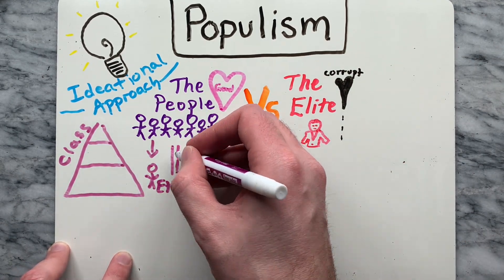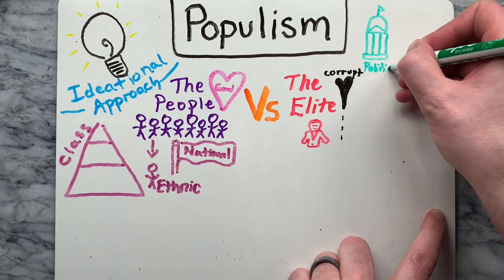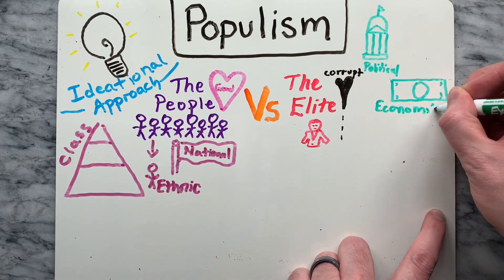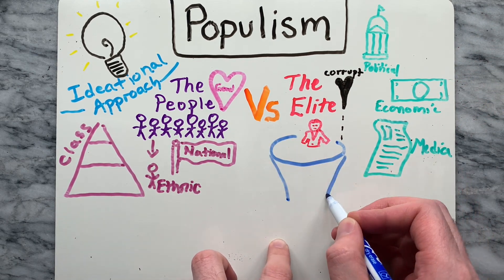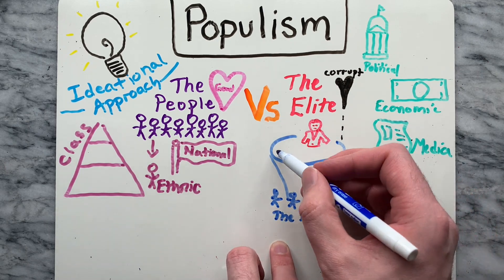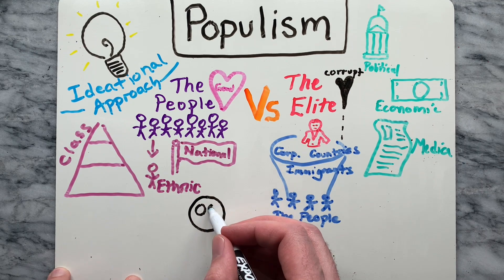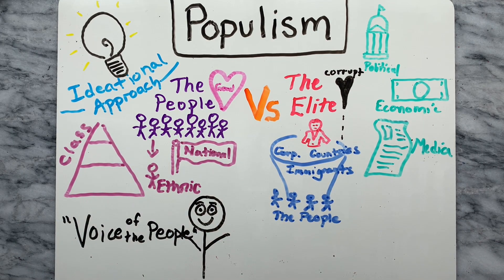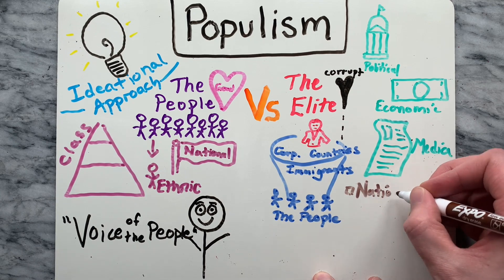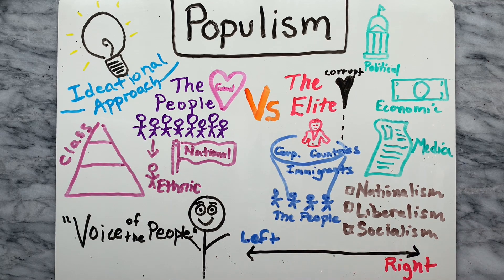Populists typically present the elite as political, economic, cultural, and media establishments. They are often accused of placing their own interests, or the interests of corporations, foreign countries, or immigrants, above the interests of the people. Populist parties and social movements are often led by charismatic people who present themselves as the voice of the people. Populism is often combined with other ideologies such as nationalism, liberalism, and socialism, and thus populists can be found at different points along the left-right political spectrum.